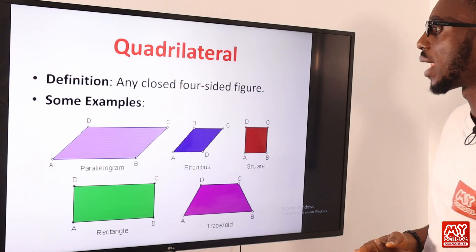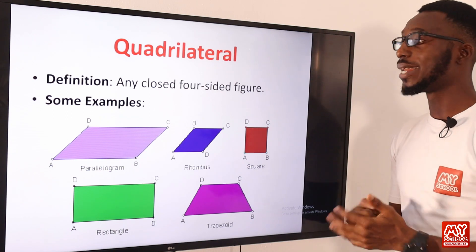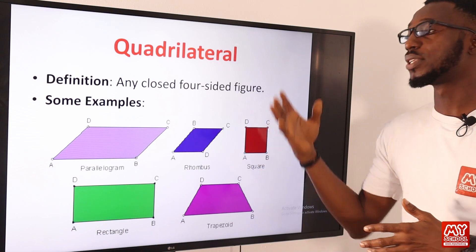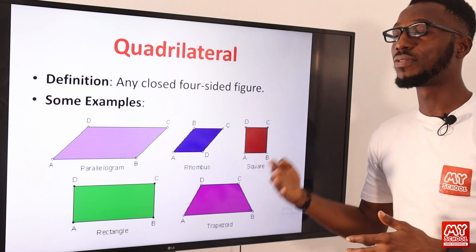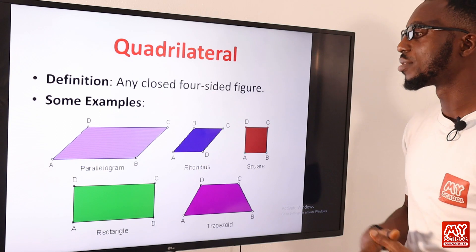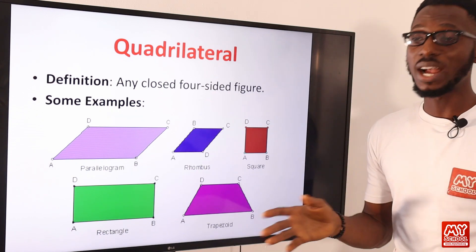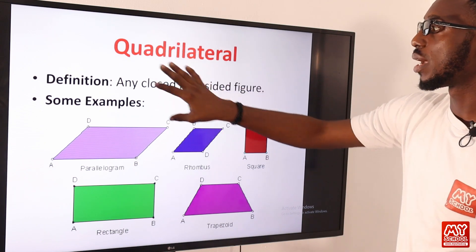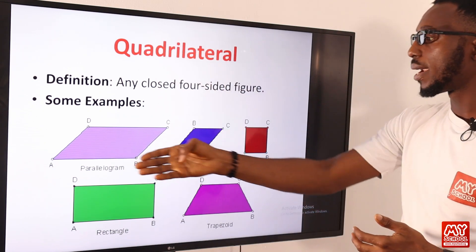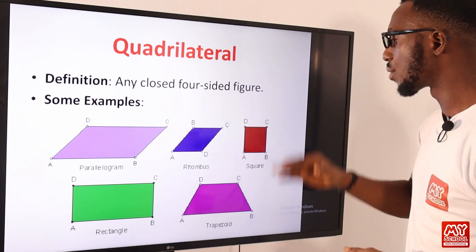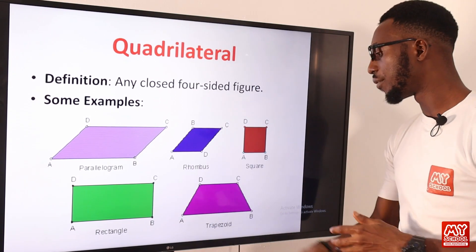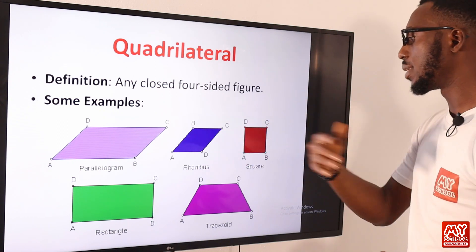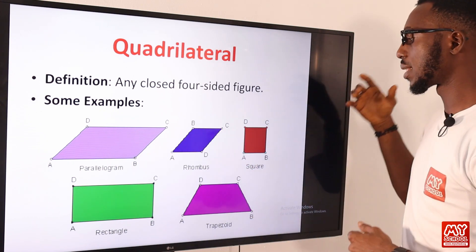Quadrilaterals are any closed four-sided figure. They are types of polygons, but this time they are just four-sided. If a polygon has more than four sides, you talk about pentagons, hexagons, heptagons, and the like. Once a polygon is four-sided, we refer to it as a quadrilateral. Examples include parallelogram, rhombus, square, rectangle, and trapezoid, each with attached properties.